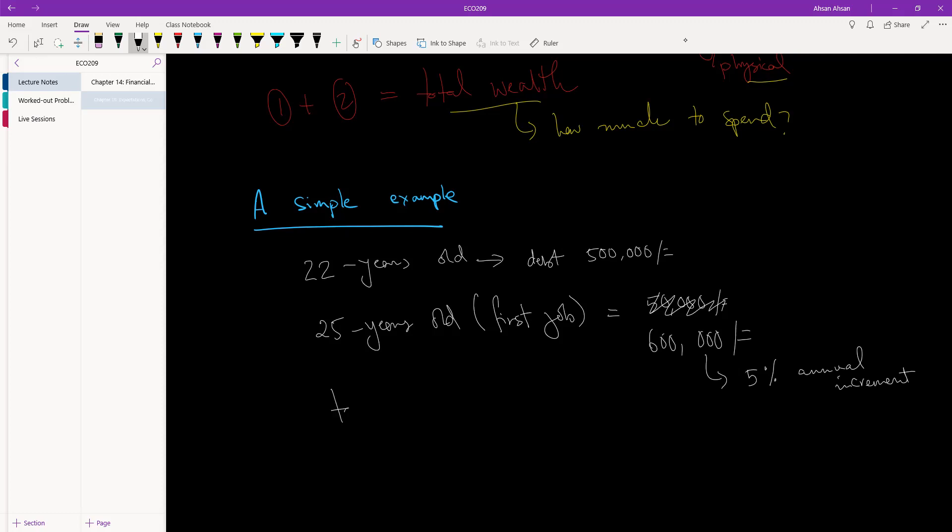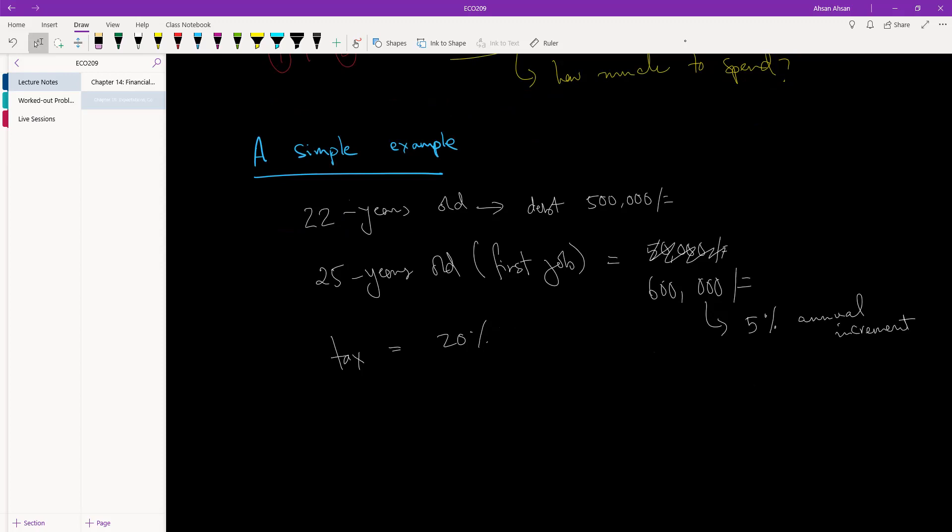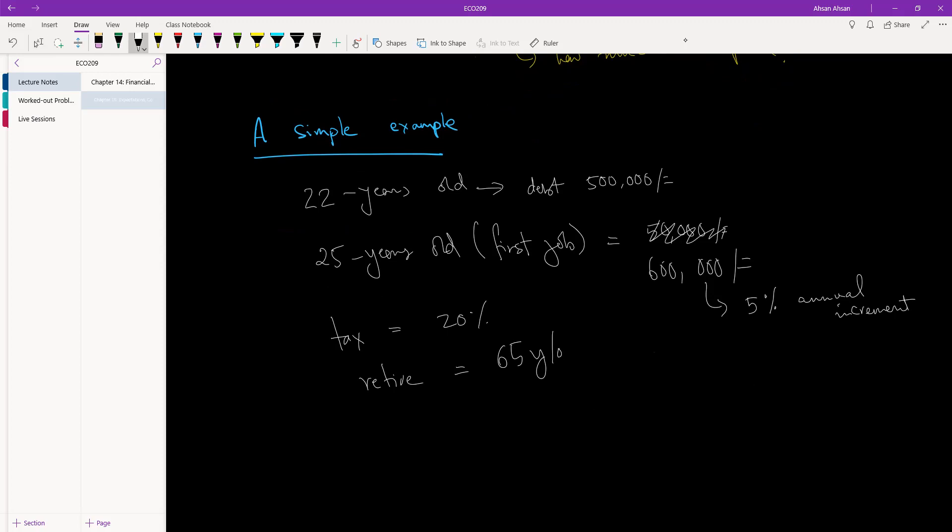You expect that over your lifetime, you are going to pay a tax of 20% on all your income. You expect that you will retire when you are 65 years old. And you expect to live until you are 80 years old, okay?